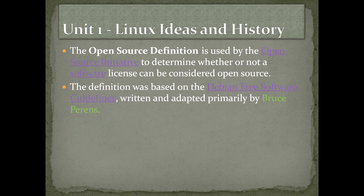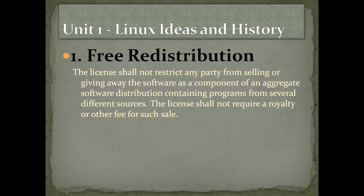The open source definition is used by the Open Source Initiative to determine whether or not a software license can be considered open source. The definition was based on the Debian free software guidelines written and adopted primarily by Bruce Perens — free redistribution.